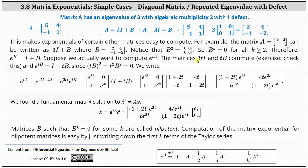And since the matrices three tI and tB commute, we can write e to the power of three tI plus tB as e to the power of three tI times e to the power of tB. And e to the power of three tI is a diagonal matrix, giving us the two by two matrix with entries e to the power of three t, zero, zero, and e to the power of three t. And because e to the power of B equals I plus B, e to the power of tB equals I plus tB. We determine I plus tB, which gives us a two by two matrix with entries one plus two t, four t, negative t, and one minus two t.